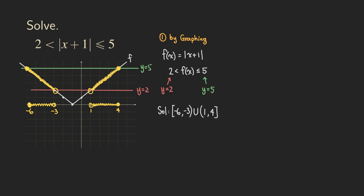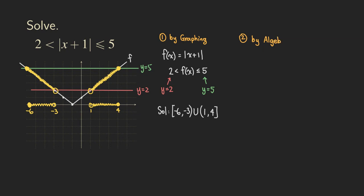That's how you do it by just looking at a graph — graph the function, graph y = 2 and y = 5, understand where the y values are, and read off the corresponding x values. That's one way to do it. Another way is to solve it like how you usually solve a three-part inequality, but this time you also need to handle the absolute value at the same time. You can also test points, but it's probably easier to deal with the absolute value algebraically.